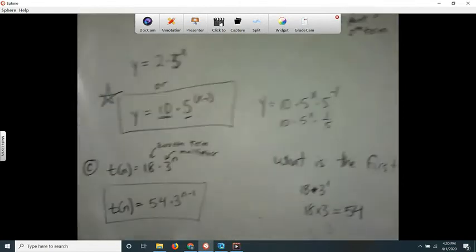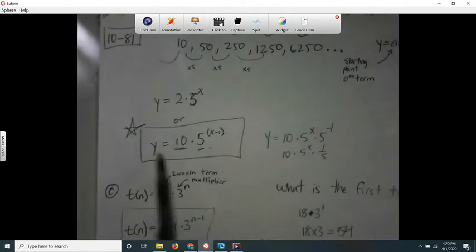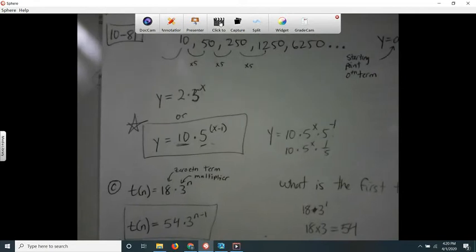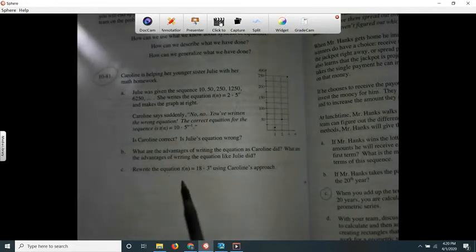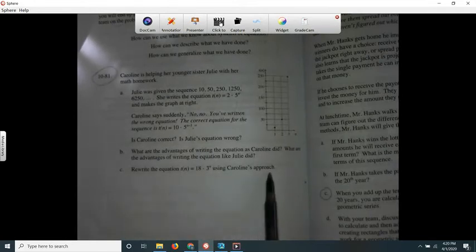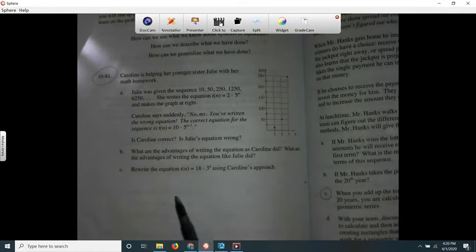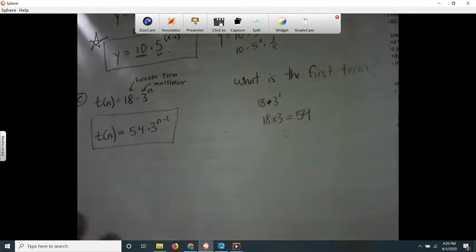So there's advantages and disadvantages. I'm telling you write it like Caroline says, because it's going to make it easier for you later on. And then letter C says rewrite the equation T(n) = 18 times 3 to the n using Caroline's approach. So Caroline's approach, remember, is they want the first term and then the multiplier and then n minus 1 on it. So how am I going to find the first term?